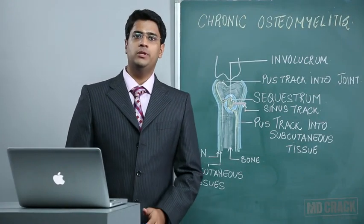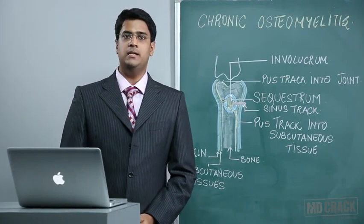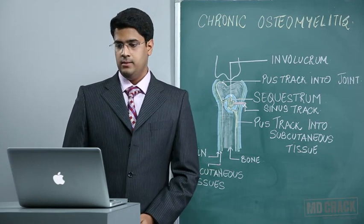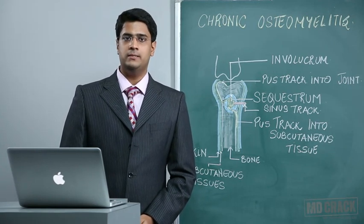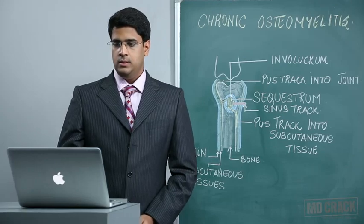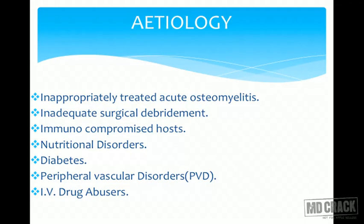We are now coming to the second part, discussing chronic osteomyelitis. The etiology includes: firstly, inappropriately treated acute osteomyelitis; secondly, inadequate surgical debridement. It is also seen in immunocompromised hosts such as patients with cancers, nutritional disorders, especially diabetic patients, and those with peripheral vascular disorders.